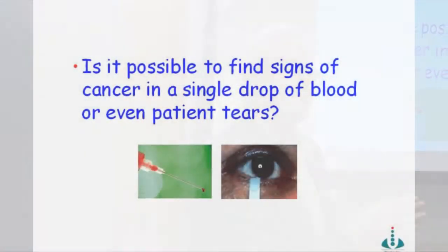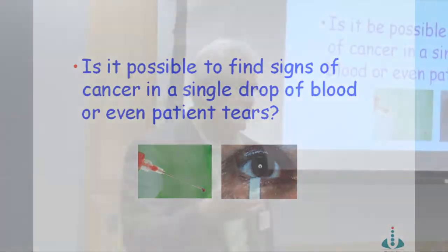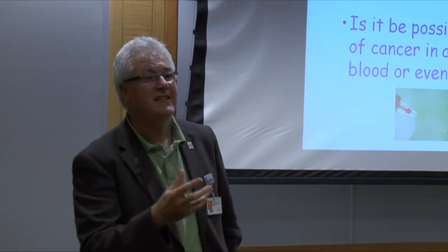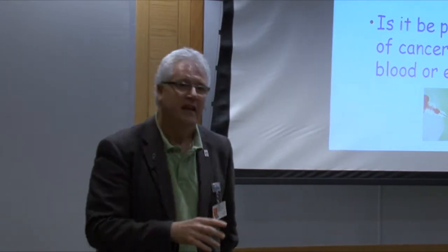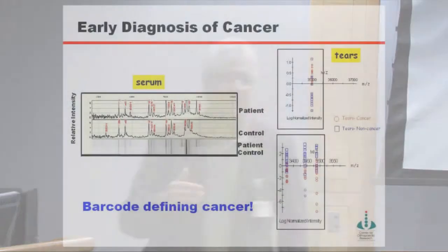Is it possible to determine whether or not a patient has breast cancer based on a single drop of blood or perhaps a single patient tear? That's the question we've been asking with the Department of Surgery here, Dr. Suzanne Klimberg predominantly, and the answer is, optimistically, I think we can. The data I'm going to show you will demonstrate that we actually can identify whether a patient has cancer based on a drop of blood or a single tear.